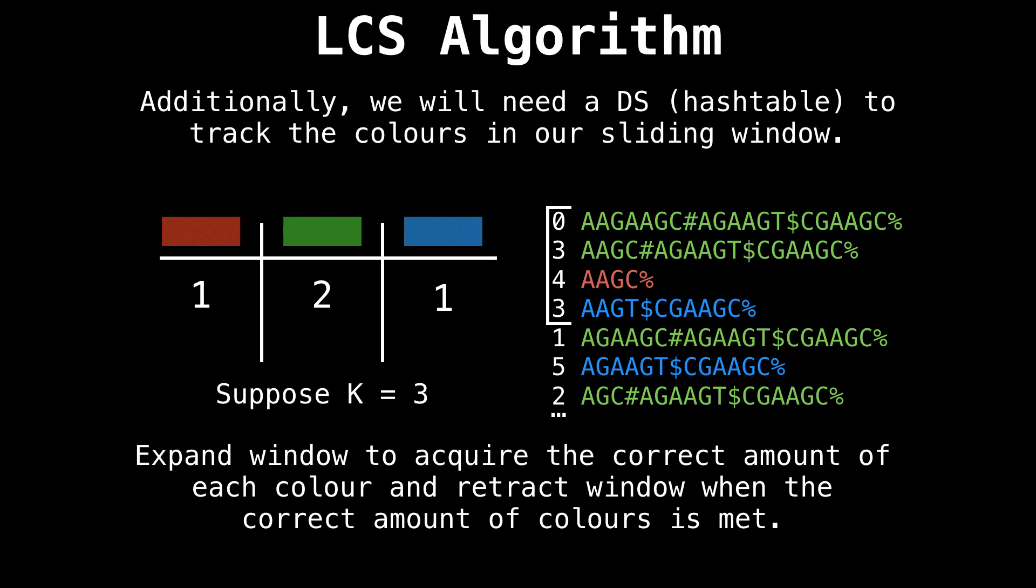Now, since we have enough of each color, we can then reduce the window size. I removed one green suffix, and we still have at least one of each color. So we can again perform a query to find out that we get the same result as last time.